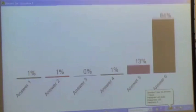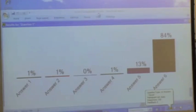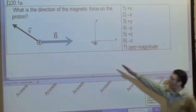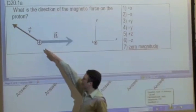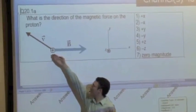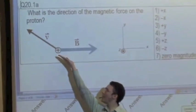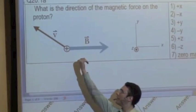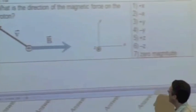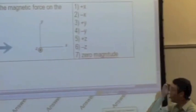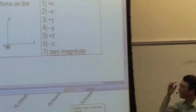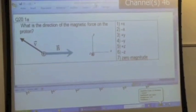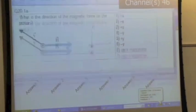Just about everybody says answer number six. We have a proton — fingers in the direction of the velocity V. I've got to wrap my fingers around so I can curl them towards the second vector, and my thumb points into the page or into the screen, which is the negative Z direction. So the force is going to be in the negative Z direction.